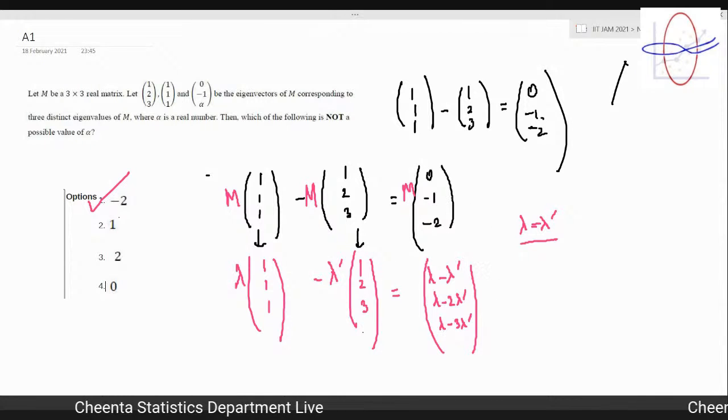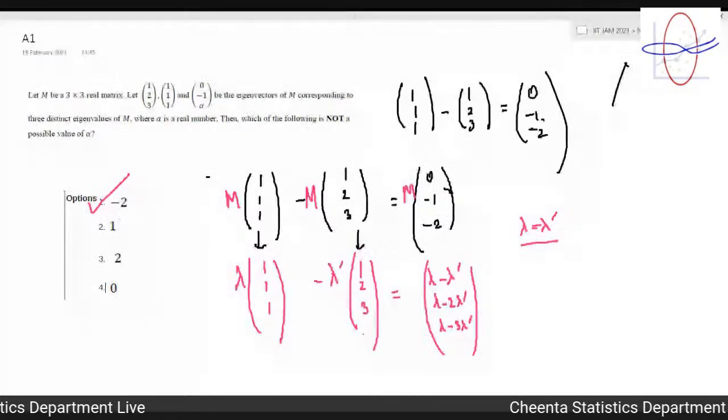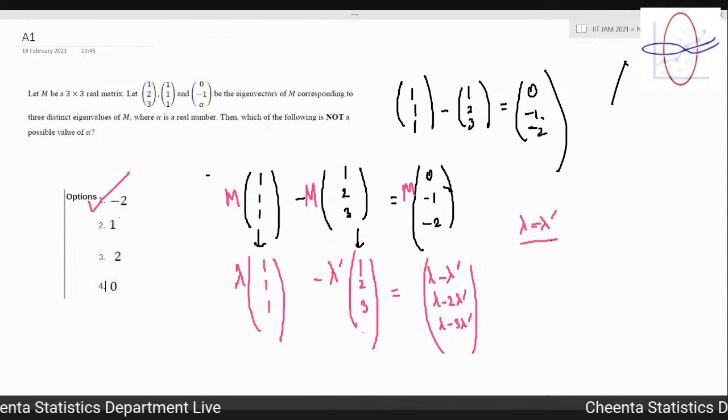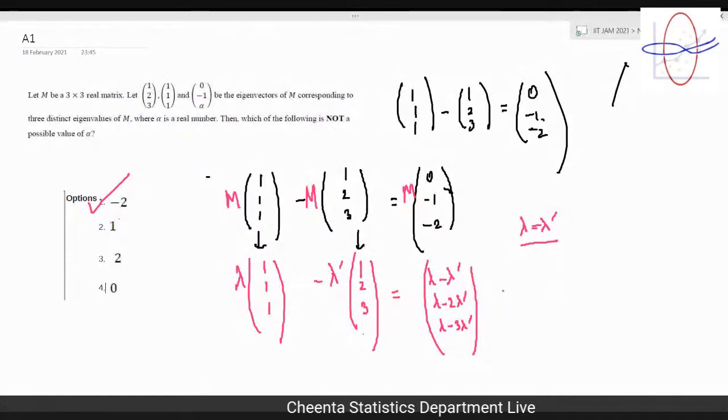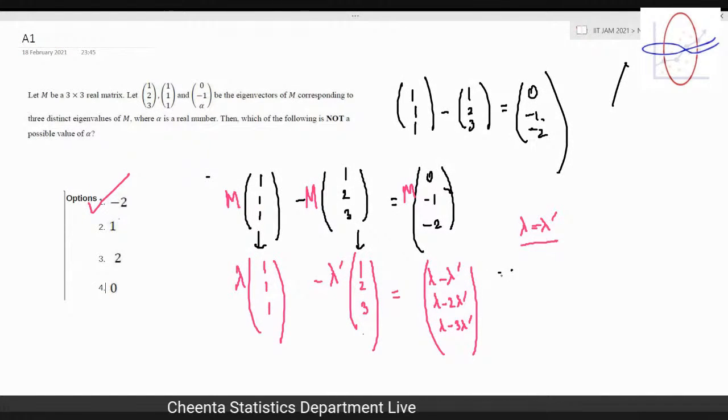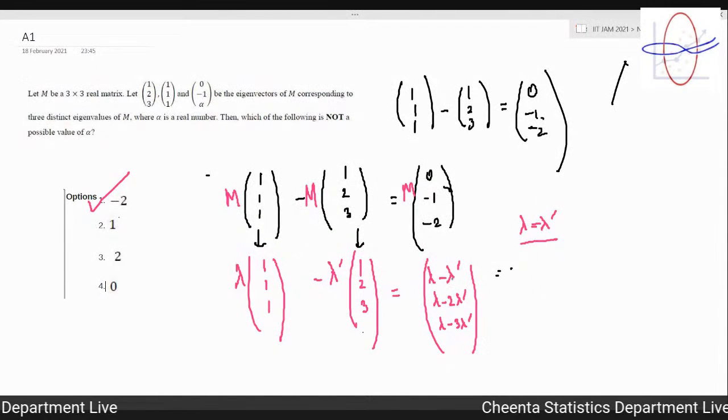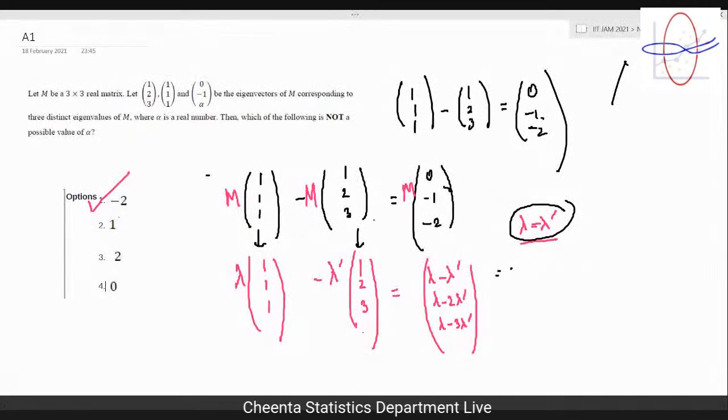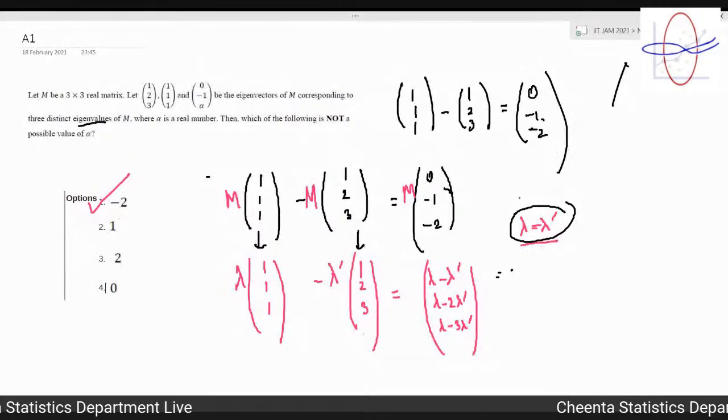For this to be an eigenvector, lambda must be equal to lambda dash, because it's an eigenvector - 0 must go to 0 only. Therefore lambda equal to lambda dash is coming out over here. But we know that these are distinct eigenvalues of M, so therefore it's a contradiction. Therefore we get that -2 is not a possible value of alpha.